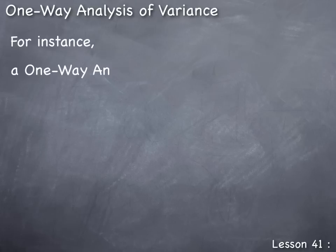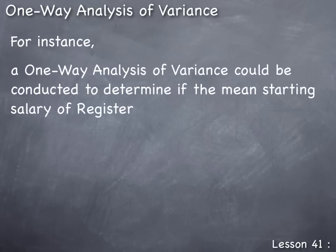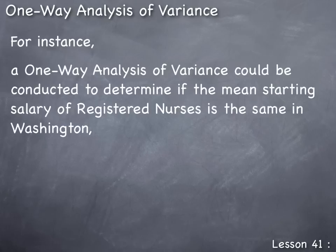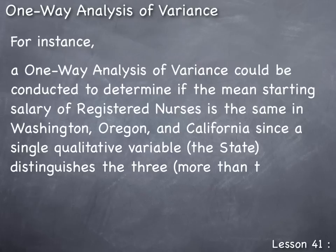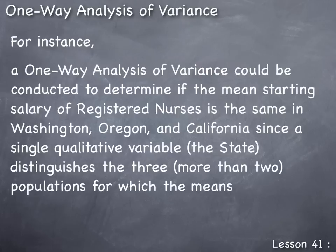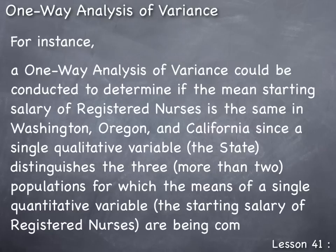For instance, a one-way analysis of variance could be conducted to determine if the mean starting salary of registered nurses is the same in Washington, Oregon, and California, since a single qualitative variable — the state — distinguishes the three populations for which the means of a single quantitative variable, the starting salary of registered nurses, are being compared.